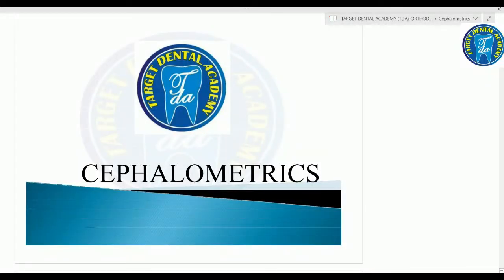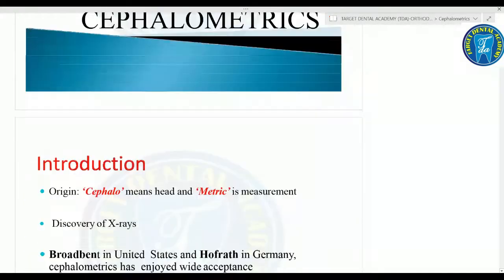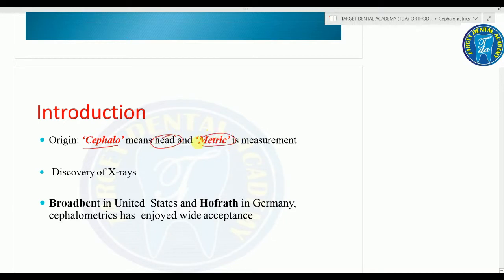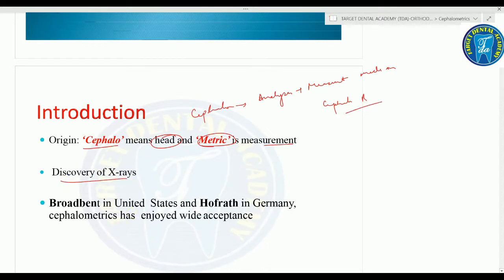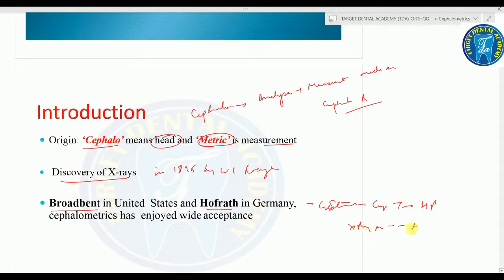Good morning. Today we are going to discuss cephalometrics. 'Cephalo' means the head and 'metric' means the measurement. Cephalometrics is used to describe the analysis and measurements made on a cephalometric radiograph. Following the discovery of x-rays in 1895 by W.C. Röntgen, Broadbent and Hofrath simultaneously presented a standardized cephalometric technique using a high-powered x-ray machine and a head holder called the cephalostat.